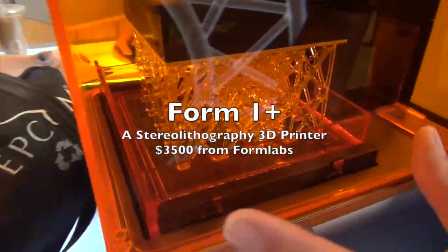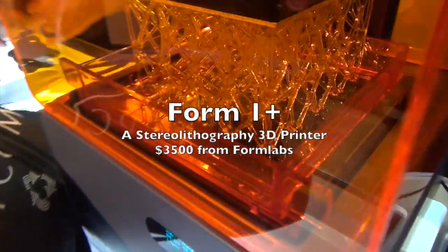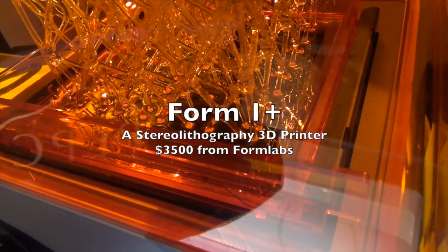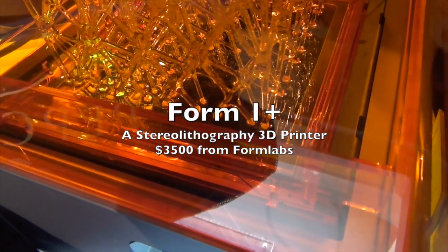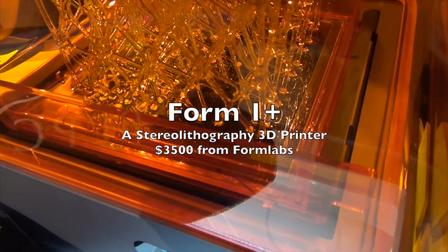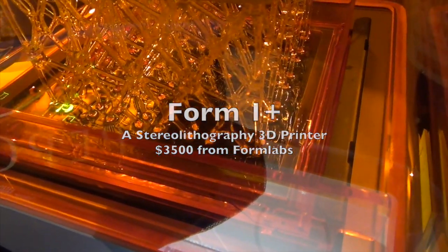This is the Form 1 Plus. You'll notice that there's a tray in the bottom of the printer and that tray is the actual build material. It's a liquid photo polymer resin. The resin is sensitive to UV light. So everywhere that laser light point is hitting the resin, the resin is actually solidifying, turning into hard plastic.